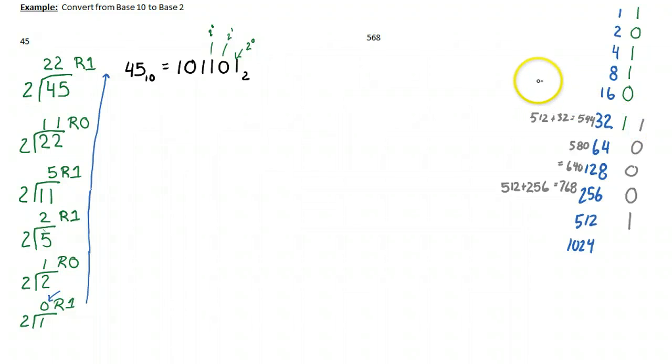So now I'm going to say 544 plus 16. And that's going to give me 560, which is less than 568, so we're going to flick that on. So then I'm going to say 560 plus 8. Well, 560 plus 8 gives me 568. And convenient, so I'm going to flick that on.